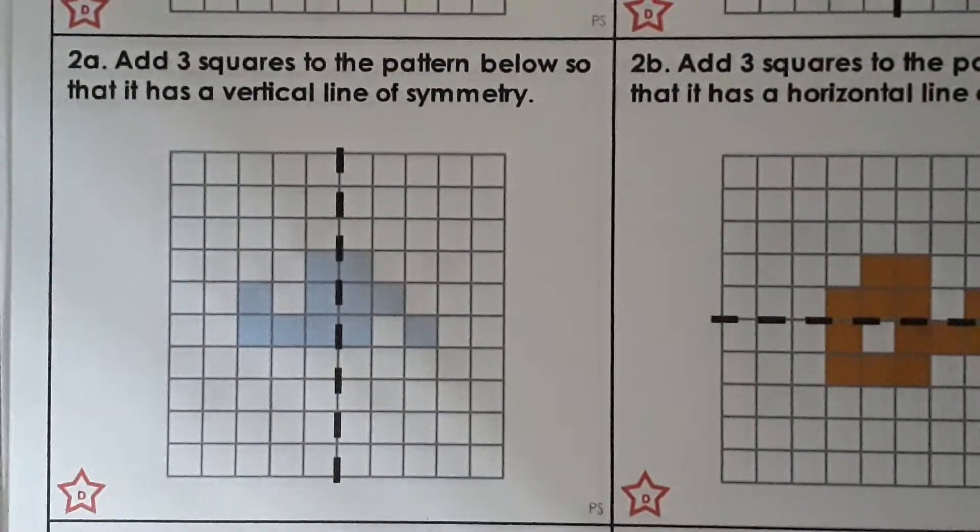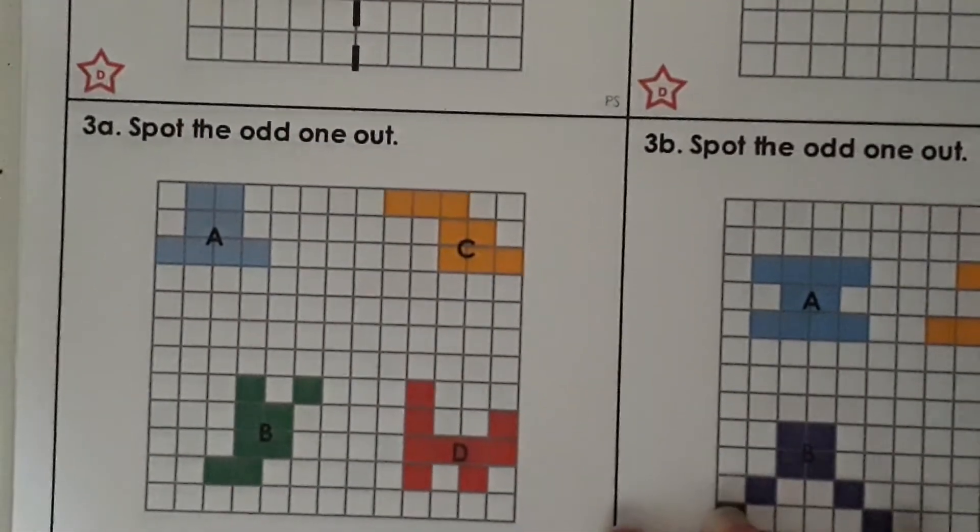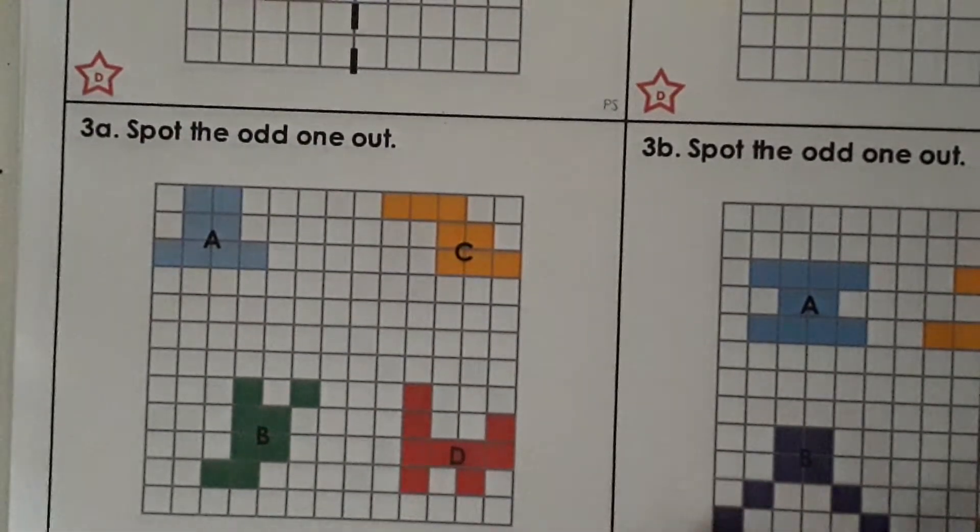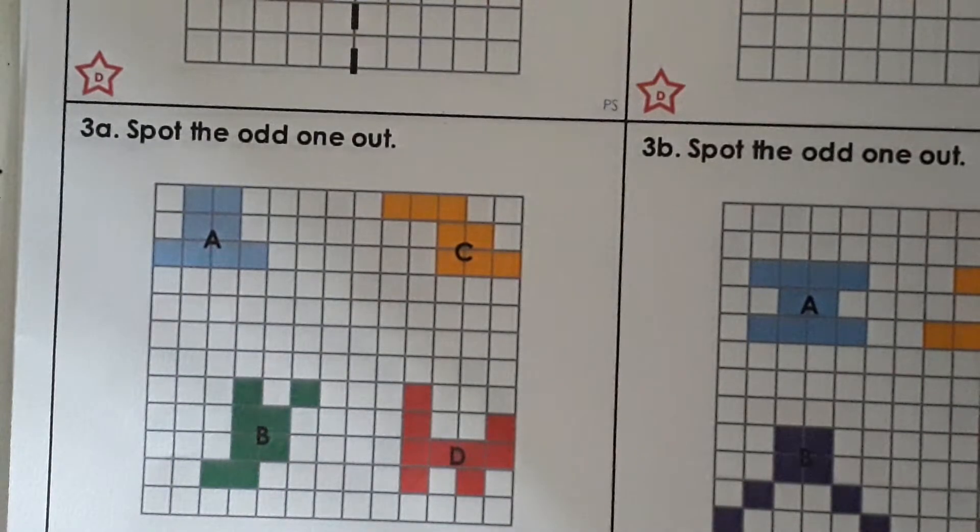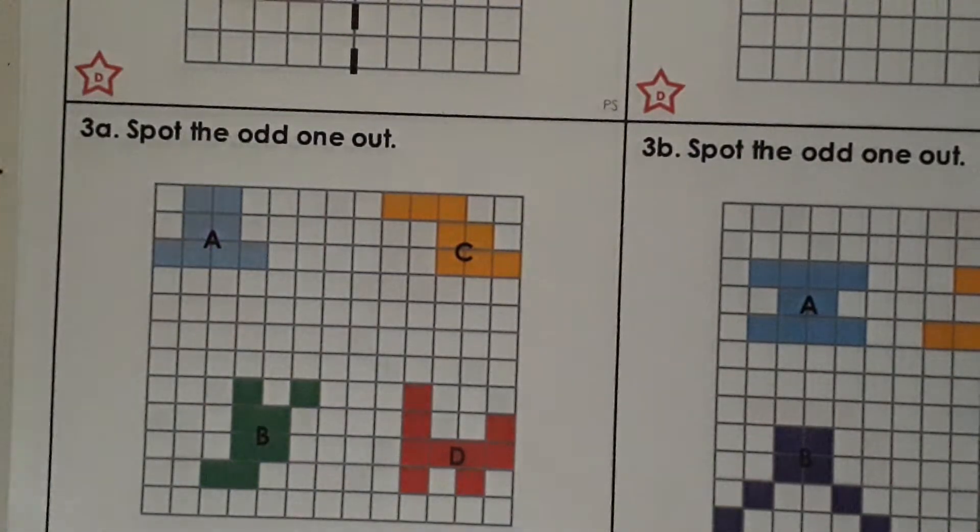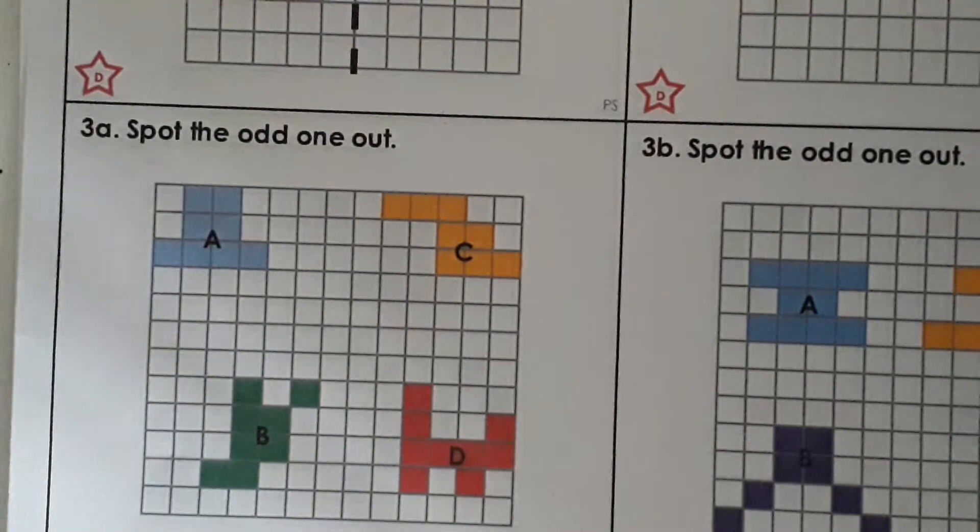Okay and then the last question let's have a quick look spot the odd one out. All right so you've got to think do all of the patterns have a vertical line of symmetry. Do all of the patterns have a horizontal line of symmetry or do all of the patterns have no line of symmetry at all. Okay but which one is the odd one out.